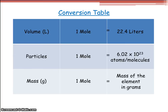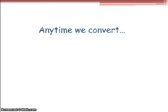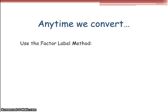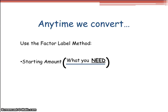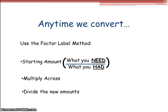Anytime we convert — this is review — we use the factor label method. We use the starting amount times what you need over what you had, and after we fill those in, we multiply across the top and then divide by the amounts multiplied across the bottom.